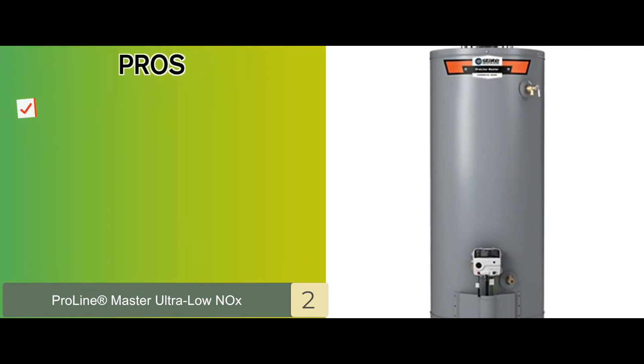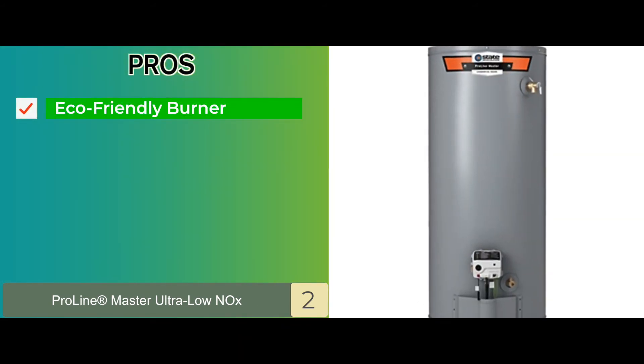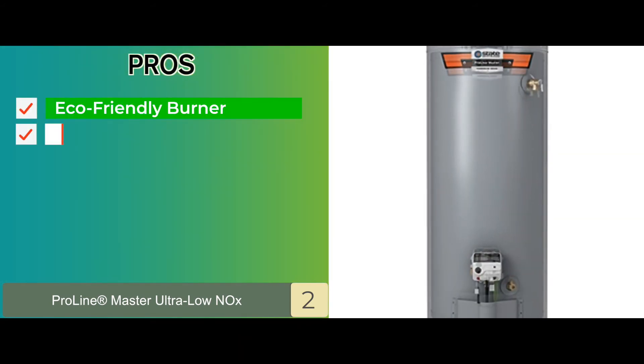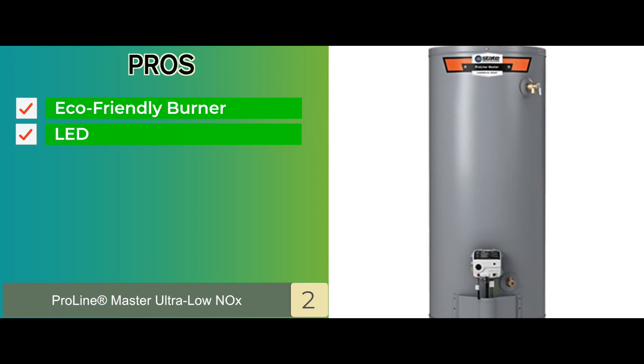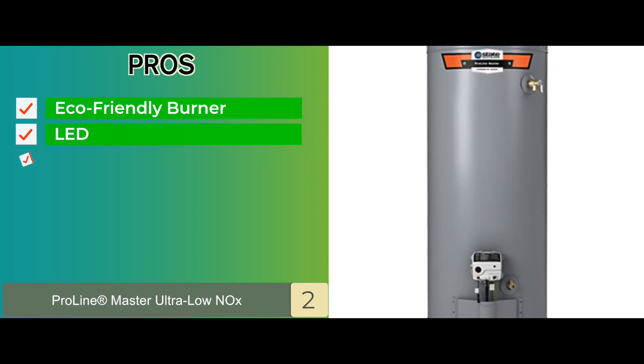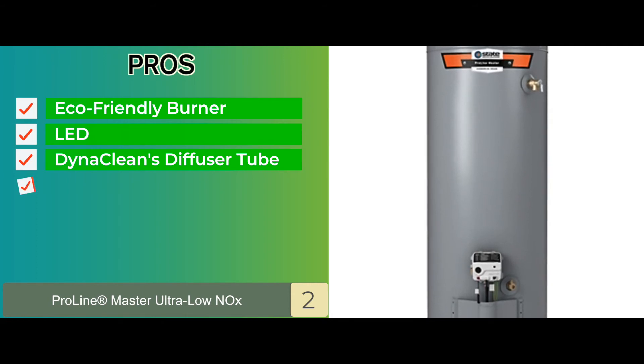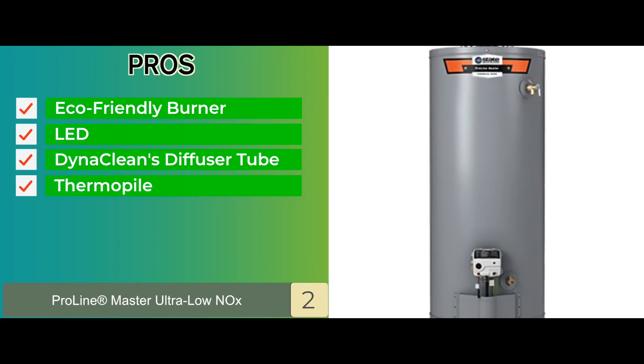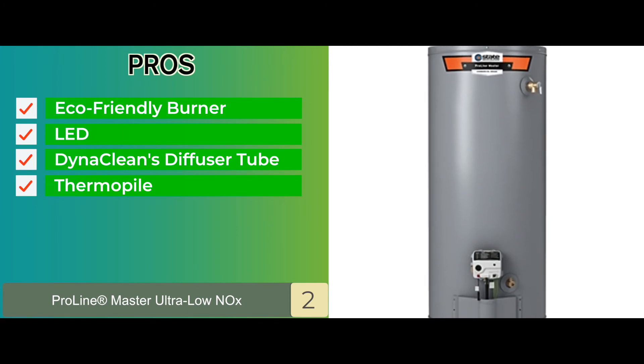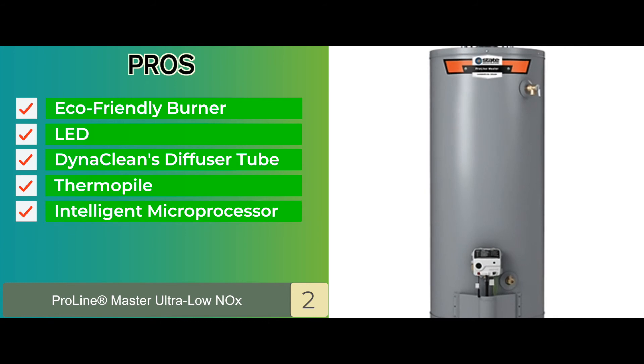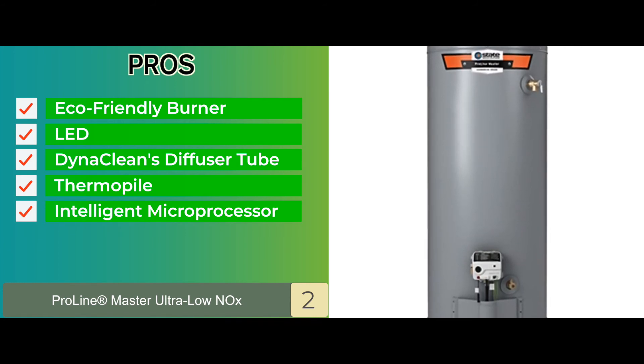Its pros are: its eco-friendly burner produces less pollution. It includes an LED that shows the operation and system diagnostics. The DynaClean's diffuser tube helps in minimizing the lime and sediment formation. It works using a thermal pile to start the heater automatically, thus no external power is required. And the intelligent microprocessor helps in speeding up the water heating process and optimizing the performance.